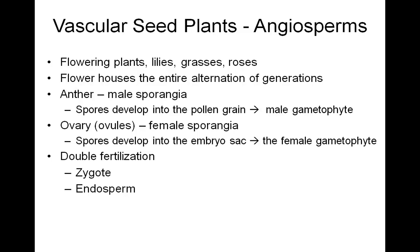Now we move on to the most highly successful land plants, the angiosperms — these are the flowering plants. Lilies, grasses, and roses are examples. The flower houses the entire alternation of generations. The anther is the male sporophyte where spores develop into pollen grains, the male gametophyte. Within the pollen, meiosis takes place to produce the sperm cells. The ovary is the female sporophyte where spores develop into the embryo sac, the female gametophyte. Within the embryo sac, meiosis takes place to produce haploid cells — egg and two central cells. The event known as double fertilization takes place only in angiosperms.